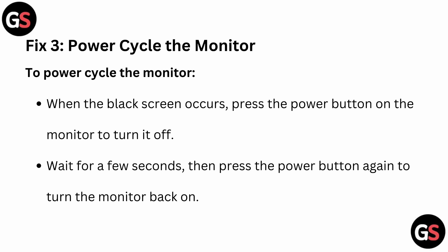Fix 3: Power Cycle the Monitor. When the black screen occurs, press the power button on the monitor to turn it off. Wait a few seconds, then press the power button again to turn the monitor back on.